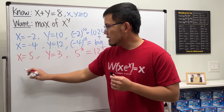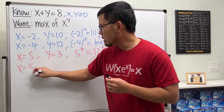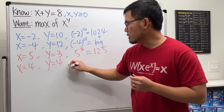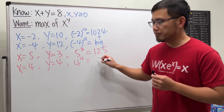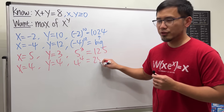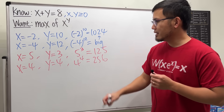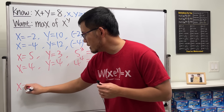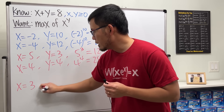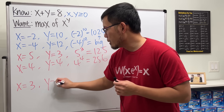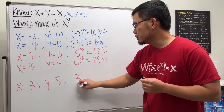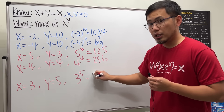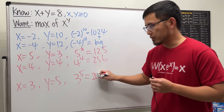And if x is equal to 4, that means y is equal to 4 as well. Then we are looking at 4 to the 4th power, which is 256. And if x is equal to 3, y will be 5. Then 3 to the 5th power — work that out — we get 243.